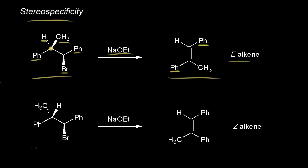Look at this reaction now. We have the phenyl groups and the bromine — those are all the same. The difference is the stereochemistry at this carbon: now we have a hydrogen coming out at us and a methyl group going away from us. Our strong base takes our beta proton, but this time we get the Z-alkene. So the stereochemistry of the substrate determined the stereochemistry of the product — there's no choice because of the mechanism.